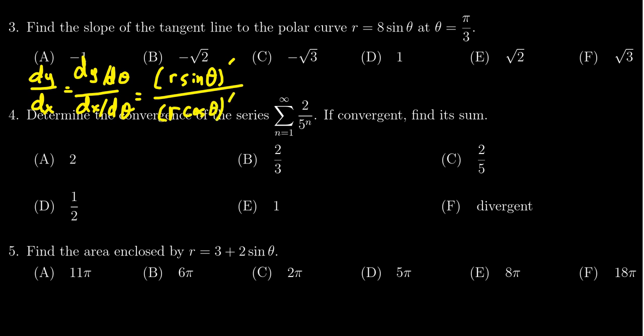Now, in this situation, r is equal to 8 sine. So I'm going to make that substitution in here right now. You can use the general formula, but we have an 8 sine squared in the numerator. We have to take the derivative. And in the bottom, we have an 8 sine theta cosine theta.